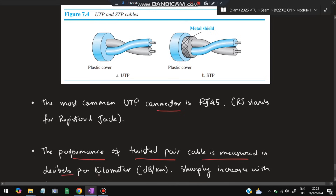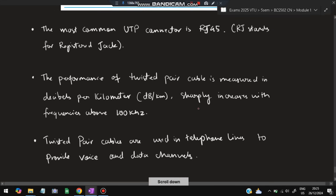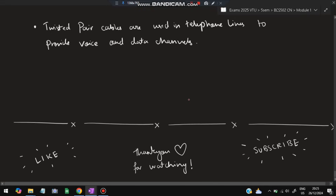The connector used with UTP is RJ45 — registered jack 45. Performance of twisted pair cable is measured in decibels per kilometer, and it sharply increases with frequencies above 100 kHz. Twisted pair cable is commonly used in telephone lines to provide voice and data channels during landline calls.